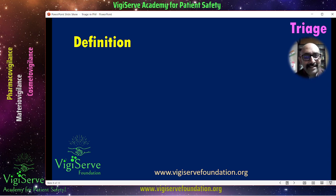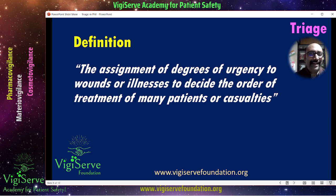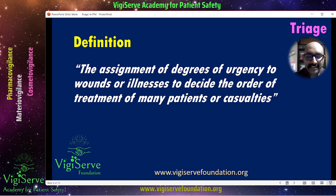So how do you define triage? It is the assignment of degrees of urgency to wounds or illness to decide the order of treatment of many patients or casualties. You identify who will receive what treatment — that is the concept in the healthcare field. In some hospitals, you also have triage nurses, who identify which patient will get what treatment and the kind of priority.